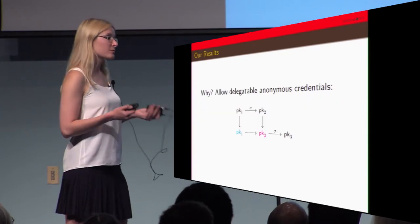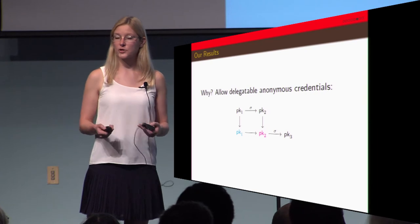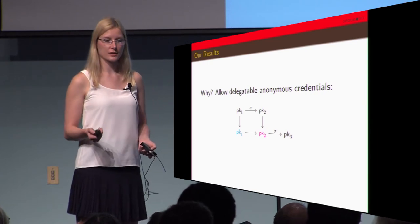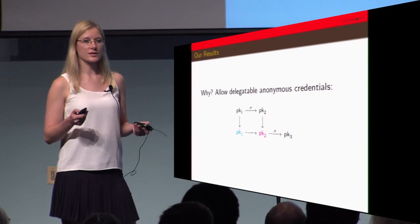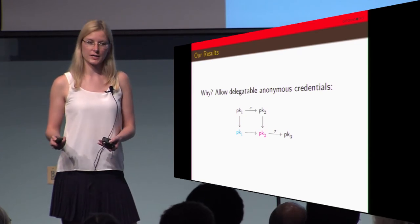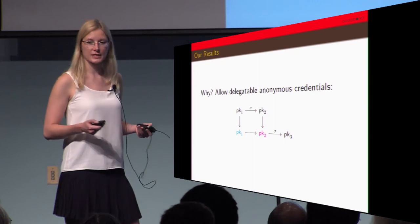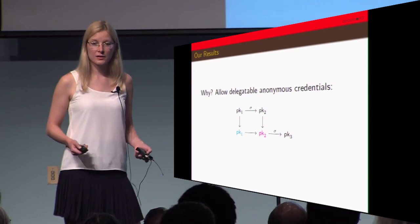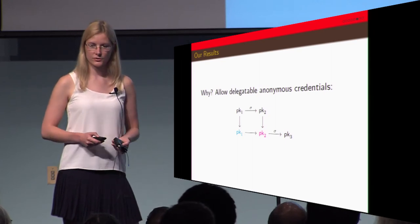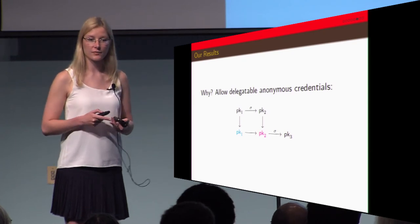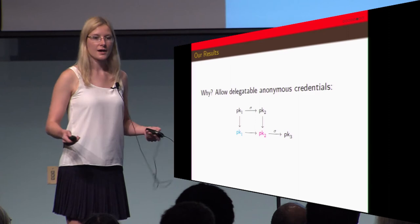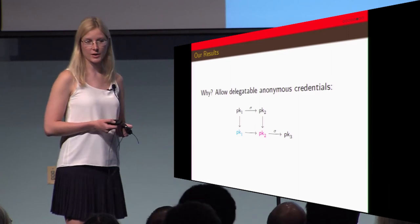Why do we care about this? Our original motivation was to construct delegatable anonymous credentials. The basic idea is that a user signs the next user's public key, and then that user can take the signature and randomize it. So everybody's acting under pseudonyms which is why it's anonymous. Through the randomization of the message and the public key you're able to achieve delegatable anonymous credentials.